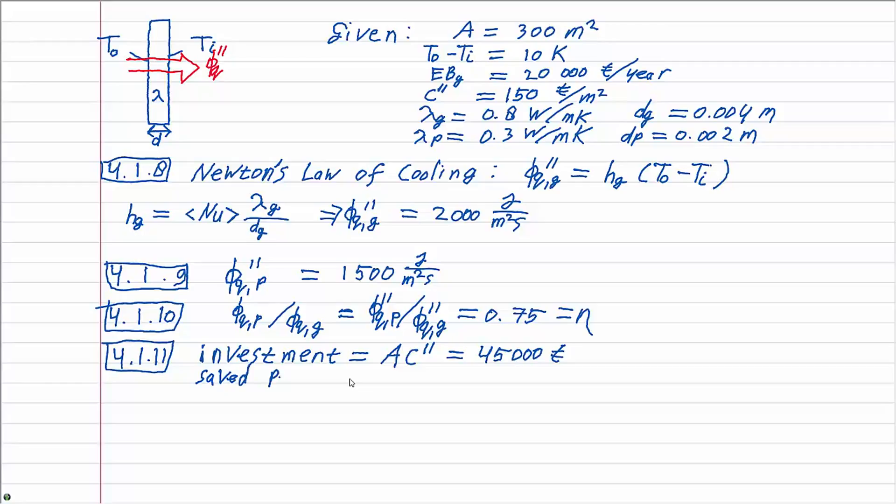The amount of money saved each year can be calculated from the ratio of heat flows found earlier as 1 minus ETA times the original energy bill, since this represents the original bill minus the new bill. So the amount saved is 5000 euros a year.